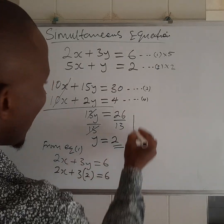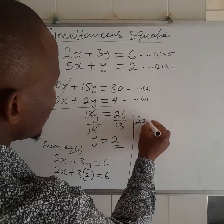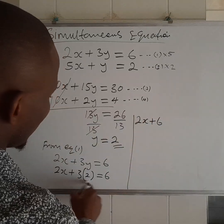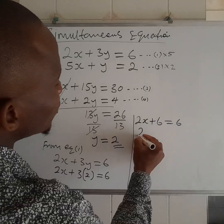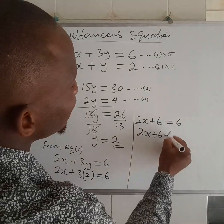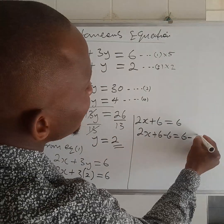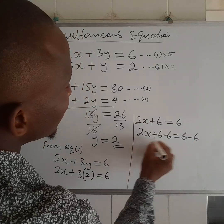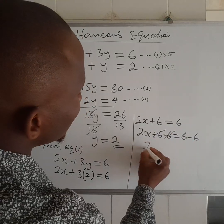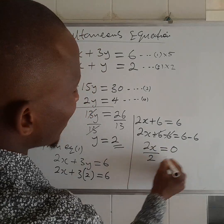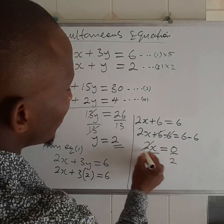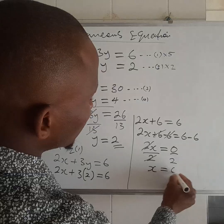When you multiply, you have it at 2x plus 6, it's equal to 6. We subtract 6 from both sides, you have 6 minus 6. This will go away with this. You have it at 2x is equal to 0. We divide both sides by 2. The value of x becomes 0.